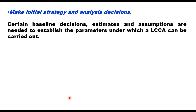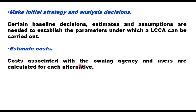The first step is to make initial strategy and analysis decisions. Certain baseline decisions, estimates and assumptions are needed to establish the parameters under which an LCCA can be carried out. It may include alternative pavement design, determining analysis period and performance period for the project. Then estimate costs — in a construction project, there are two types of costs: costs associated with the owning agency and costs associated with users, and these are calculated for each alternative.